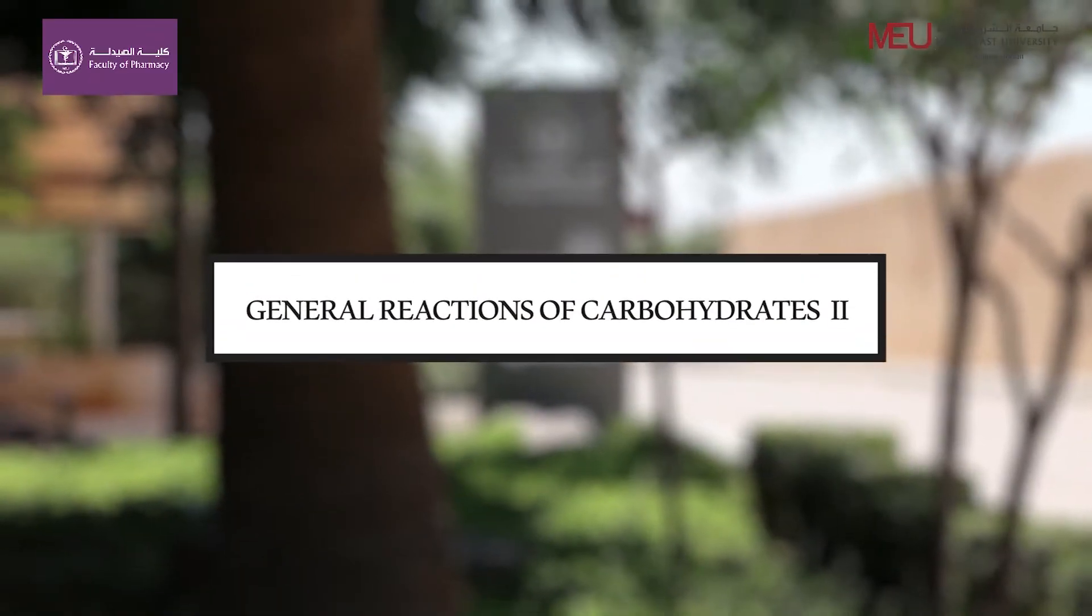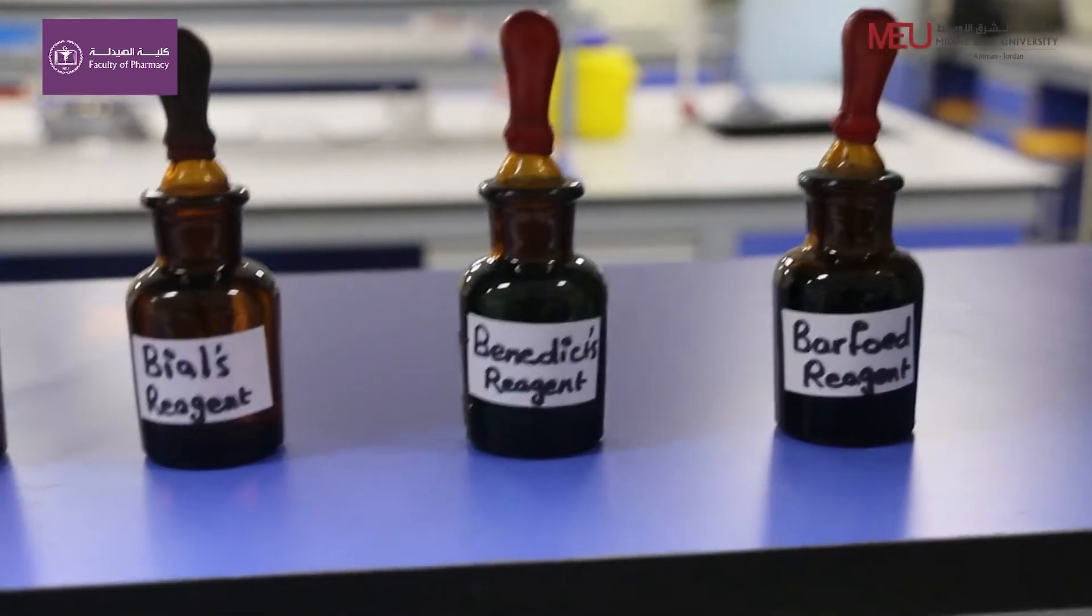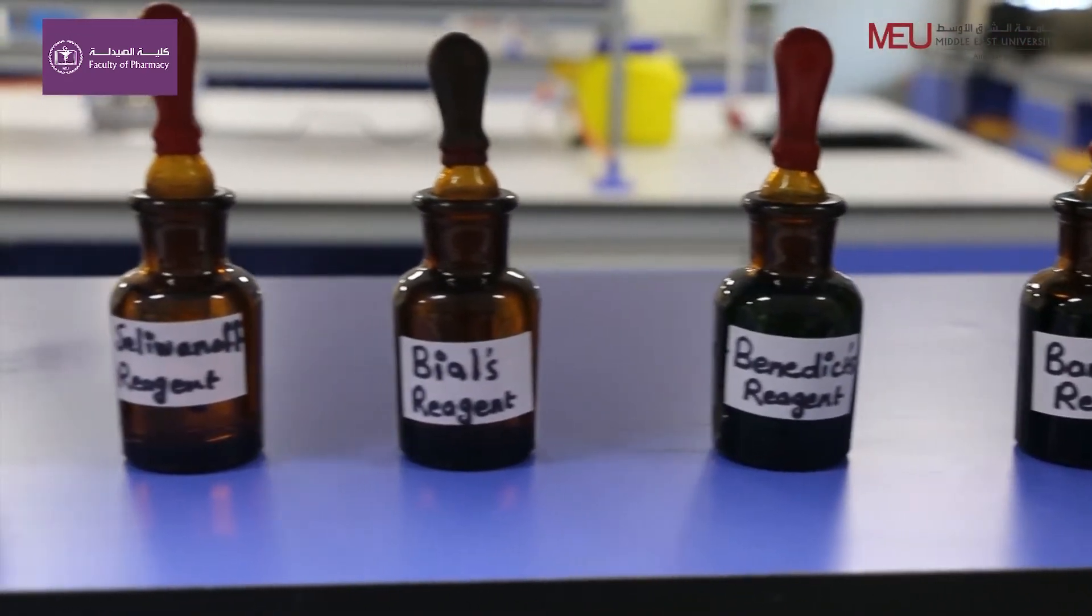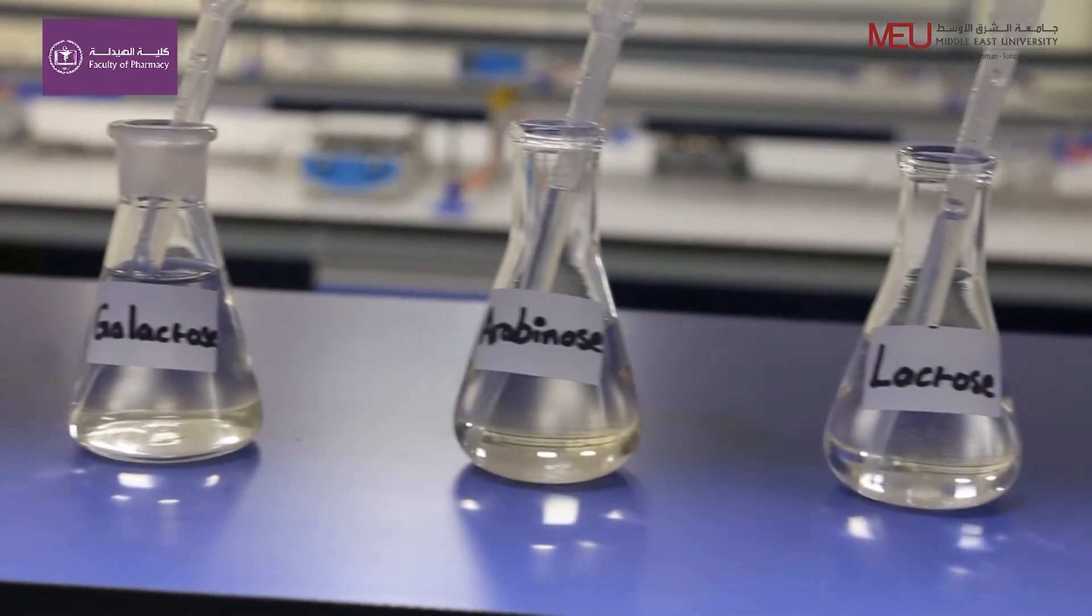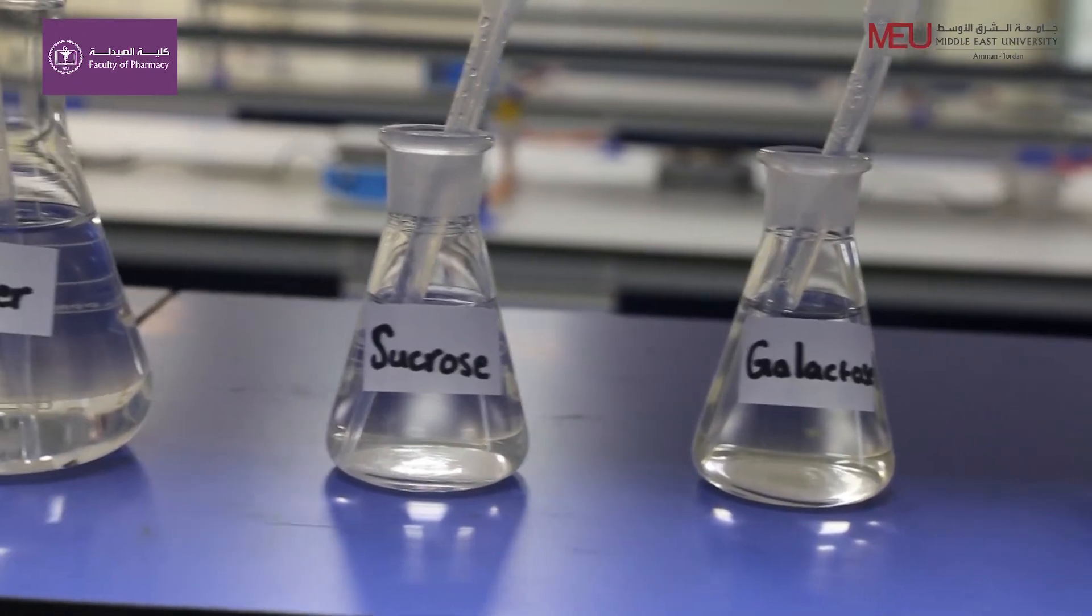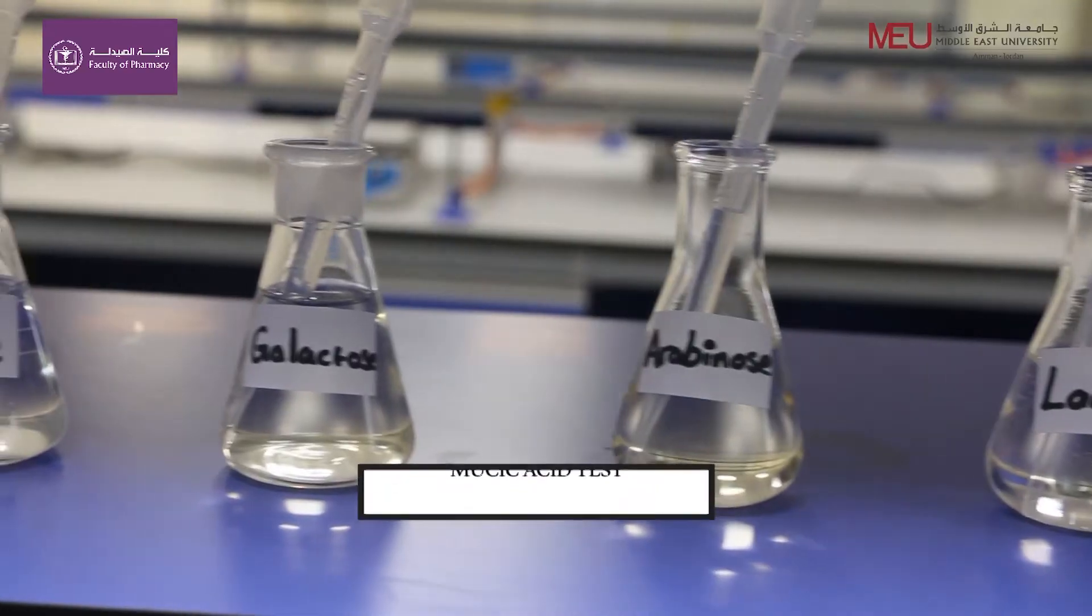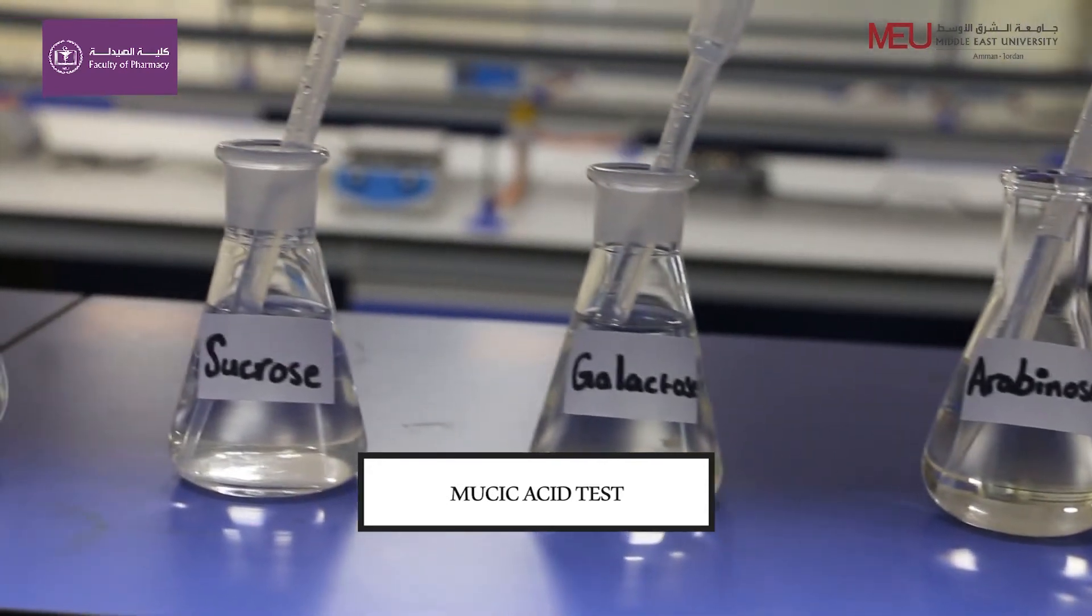General reactions of carbohydrates. Previously we have discussed three chemical tests to identify different types of carbohydrates. In this video we're going to identify carbohydrates using another important test: mucic acid test. Mucic acid test is highly specific for galactose sugar.